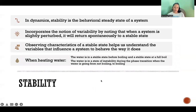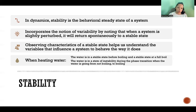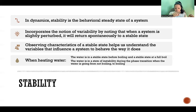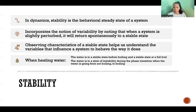Stability. We define it in many different ways depending on what area of science we're looking at. In dynamics, stability is the behavioral steady state of a system. It also incorporates the notion of variability by noting that when a system is slightly perturbed, it will return spontaneously to a stable state. Like if we have a bowl and there's a ball in the bowl — if we tap the ball, it might roll around a little bit and will return right back to its original position and its original steady state.